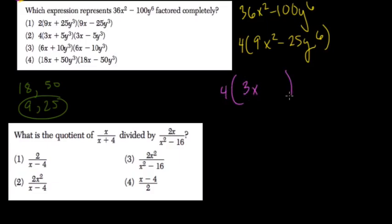This is all times 4. And then over here, you have 25y to the sixth. So the square root of that is 5y to the third, right? 5y to the third.